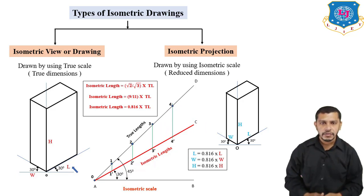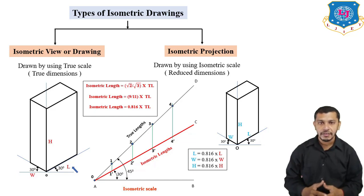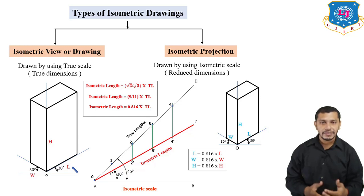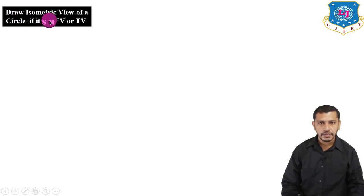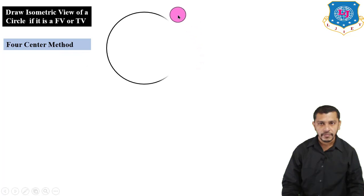Now the most important thing in isometric projections or isometric view is how to draw the isometric view of a circle, because the isometric view or isometric projection of a circle is not a circle — it is an ellipse. We will use the four-center method to draw the circle in isometric view or isometric projections.